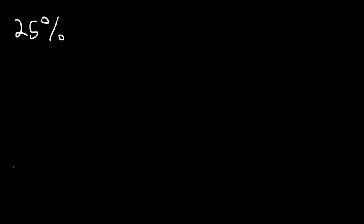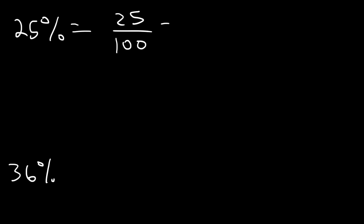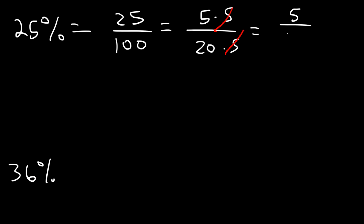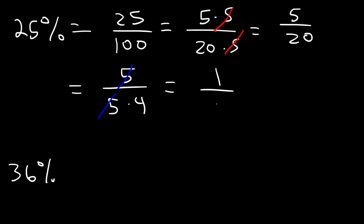Go ahead and try these two: convert 25% into a reduced fraction and do the same for 36%. So let's start by writing 25% as 25 divided by 100. 25 is 5 times 5, and 100 is 20 times 5, so we can cancel a 5 and reduce it further. Right now we have 5 over 20. It turns out that 20 is 5 times 4, so we can cancel a 5 as well. 5 divided by 5 is 1, so when you get rid of the 5 on top, replace it with a 1. Therefore, 25% is equivalent to 1 fourth as a simplified fraction.